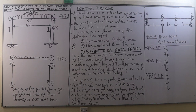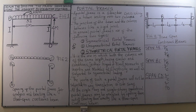A symmetrical portal frame is one in which both columns are of the same length. For example, in Figure 1, column AB and column DC each have a height of four meters. They also have similar end conditions — either hinged or fixed. In Figure 1, column AB is fixed at A and column DC is fixed at D, so the end conditions — fixed at A and D — are the same.